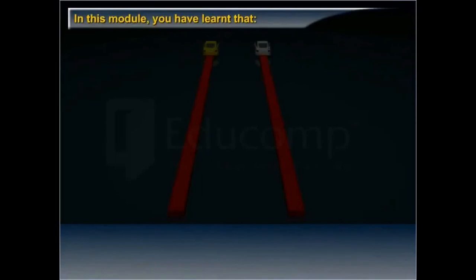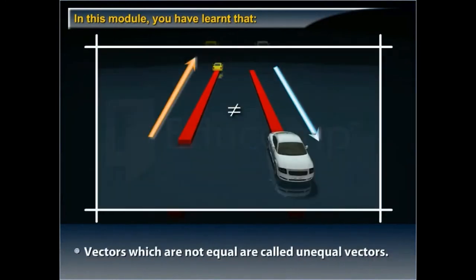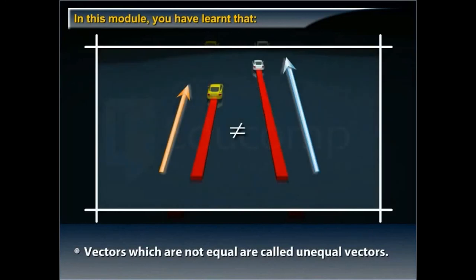In this module, you have learnt that vectors having same magnitude as well as direction are called equal vectors. Vectors which are not equal are called unequal vectors.